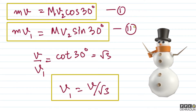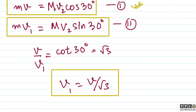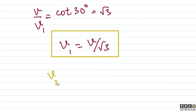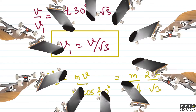Besides this, from equation 1 we can find the value of v2. So v2 will be equal to mv upon capital M cos 30 degrees. This gives v2 equal to small m upon capital M multiplied by 2v upon root 3.